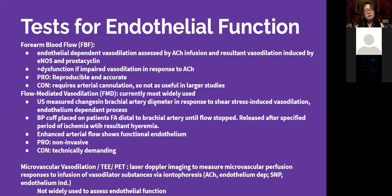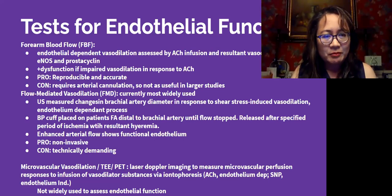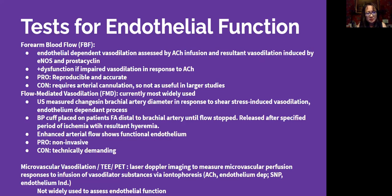One useful component was the review of tests to assess endothelial function. What's been done in the past hasn't translated well into clinical practice. One described test is the forearm blood flow (FBF), which uses endothelial-dependent vasodilation assessed by acetylcholine infusion with resultant vasodilation induced by eNOS and prostacyclin. A positive test for dysfunction is impaired vasodilation in response to acetylcholine. It's reproducible and accurate, but requires arterial cannulation, which limits its use in larger studies.